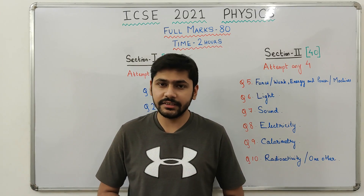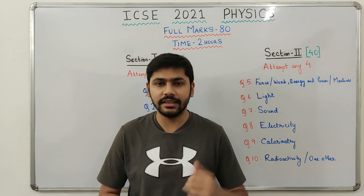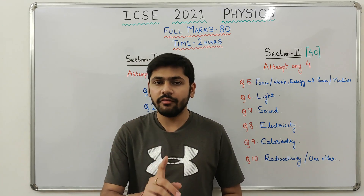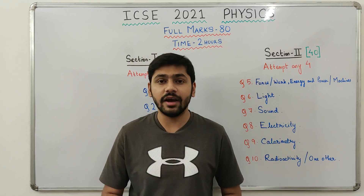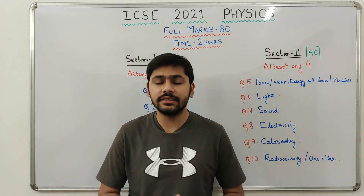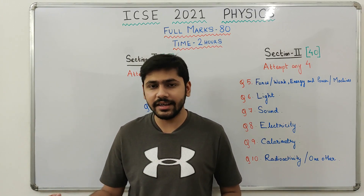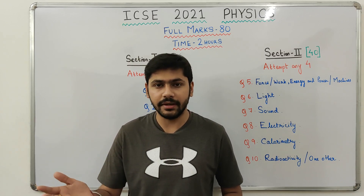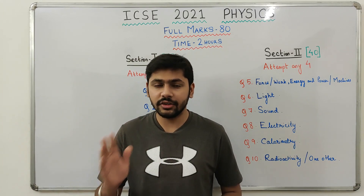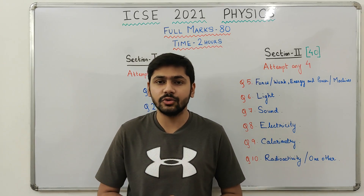The second thing is numericals. Around 30 to 35% of all questions in the physics paper will be numericals, so practicing them is very important. Knowing all formulas and where to apply them is also essential. Units are critical — for example, if asked to find current, always write the unit, such as 2 ampere. If you don't write units, you will lose marks. Understand SI and CGS units carefully.